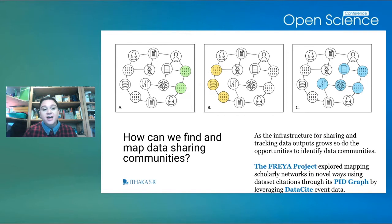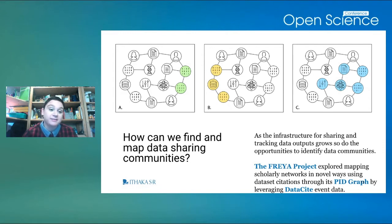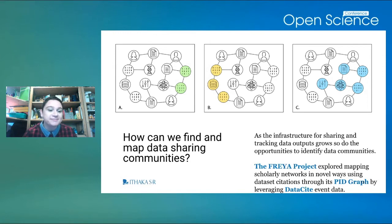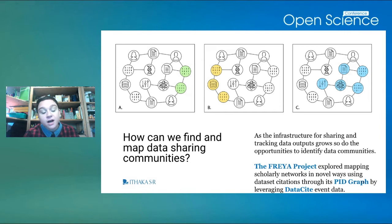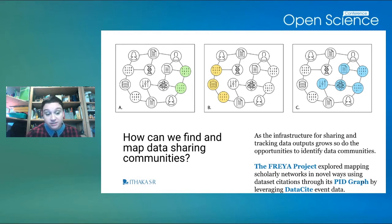It's really important to acknowledge that you have to be creative if you want to find data communities. They're not the same as disciplines — their membership is more fluid, you don't have to have an official affiliation to join, and you can belong to multiple communities at the same time. With growing mandates around tracking outputs of data sets, we'll have more ways to identify these communities. I wanted to call out the work of the Freya project, where they use personal identifiers to graph scholarly networks, mapping out how different communities of scholars are relating to each other.